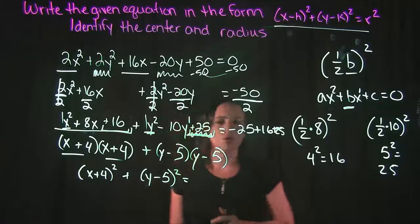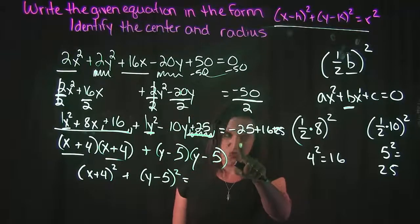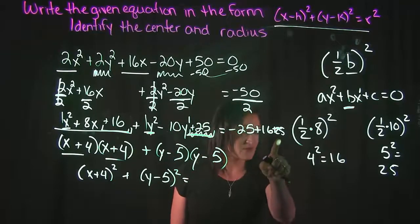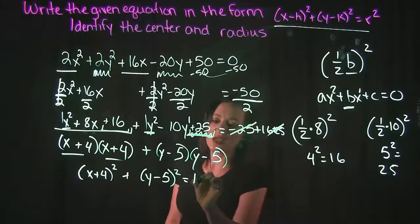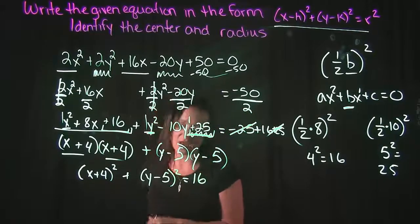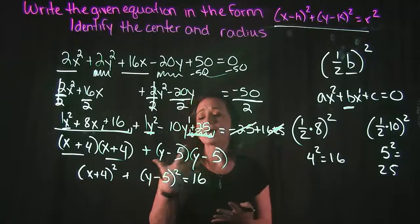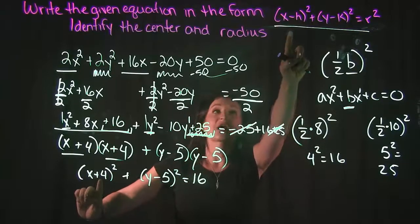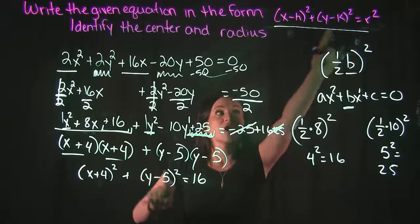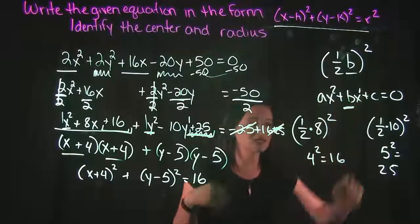And to figure out what this is going to equal to, well, let's see. On the right-hand side, I had -25. But then I also have this +25 over here. So those are actually going to cancel out, leaving me with a 16. And by doing that, we actually have wrapped up the problem and putting it in the proper form. Notice we have our x term that's squared, our y term that's squared, and that's equal to our radius squared.